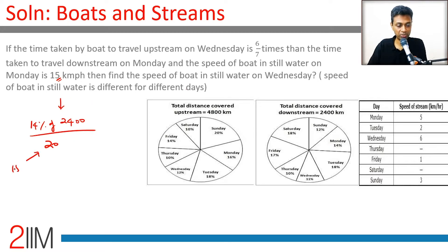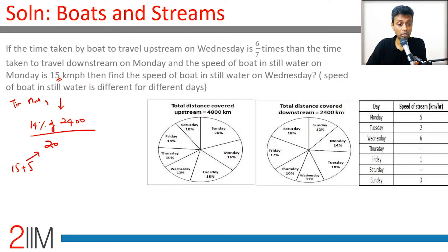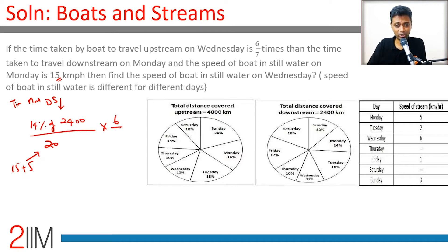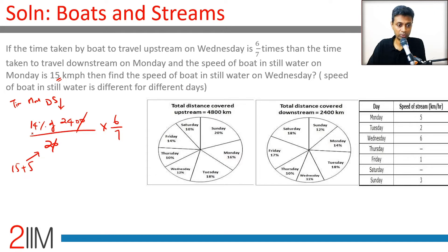Downstream speed is 20 km/h (15 plus 5, since it's downstream). Time taken on Monday downstream = distance ÷ speed. Then Wednesday upstream time = six-sevenths of Monday downstream time. Let's calculate: 2400 × 14 ÷ 100, then divide by 20 for the time, and multiply by 6/7.